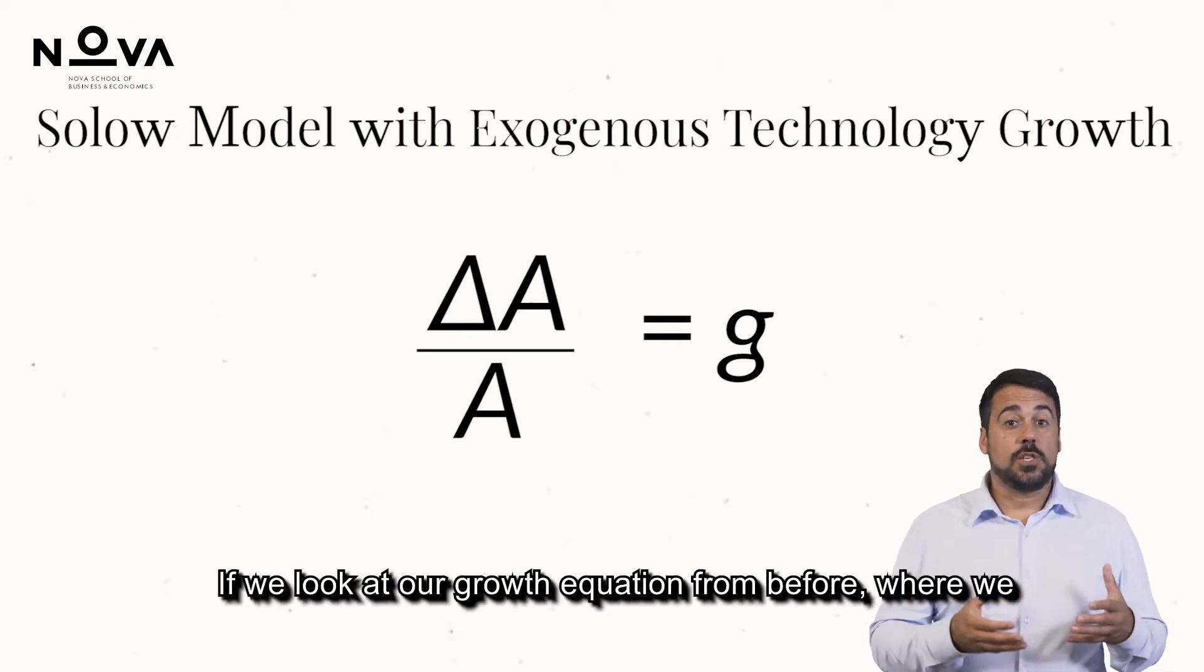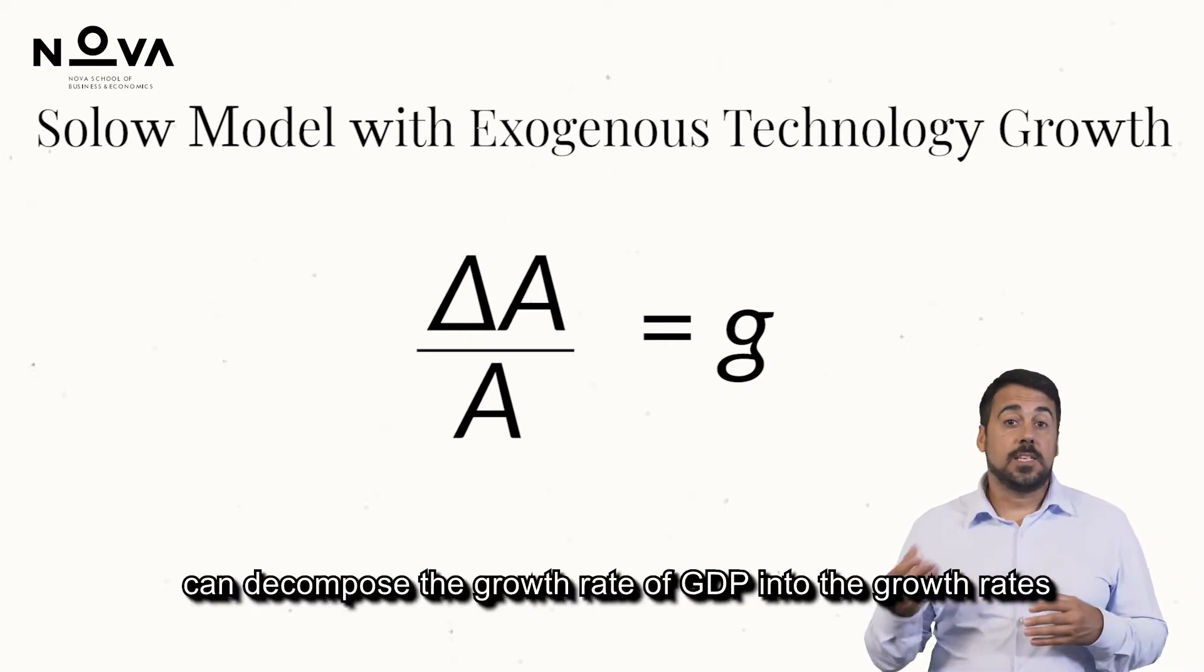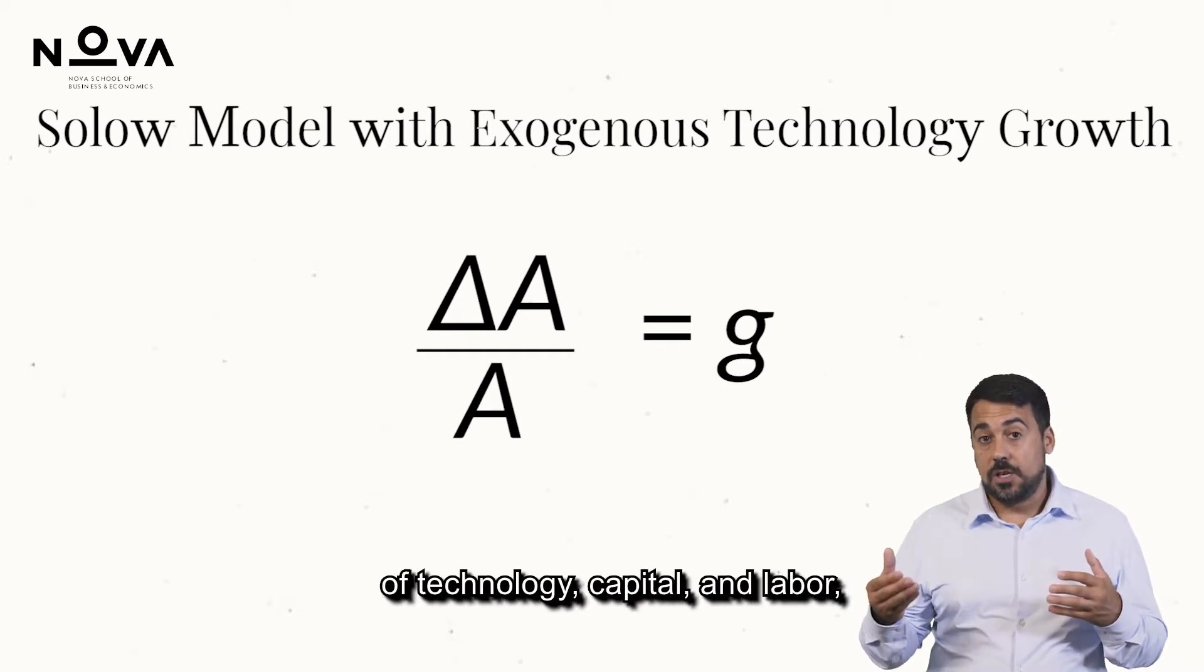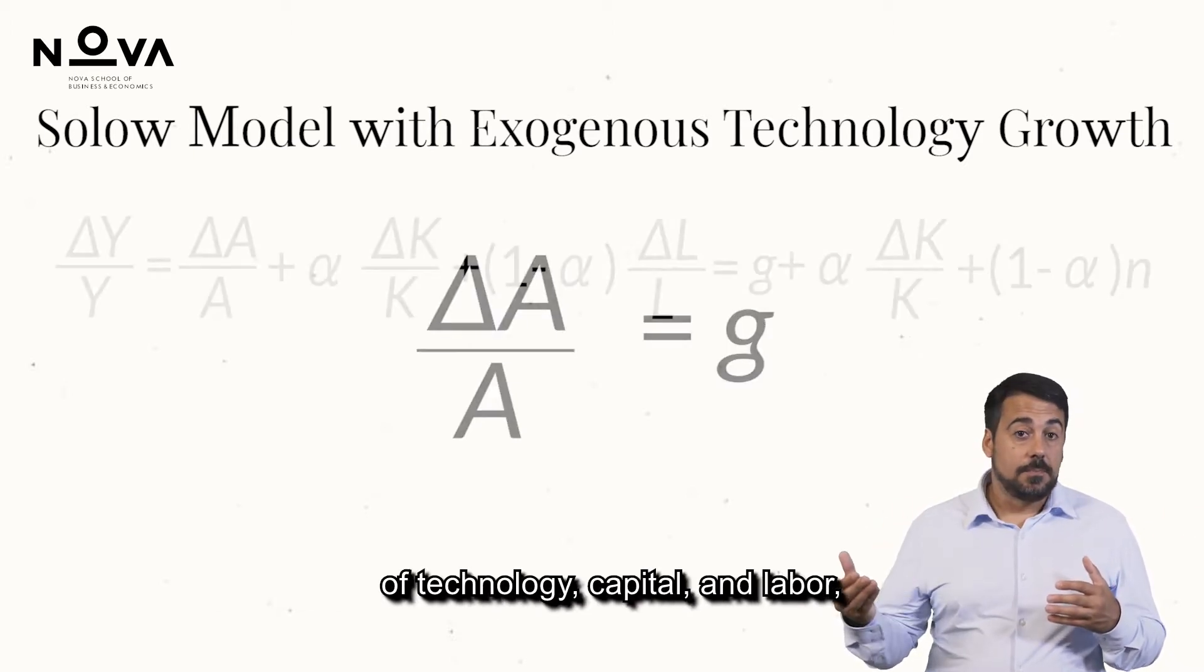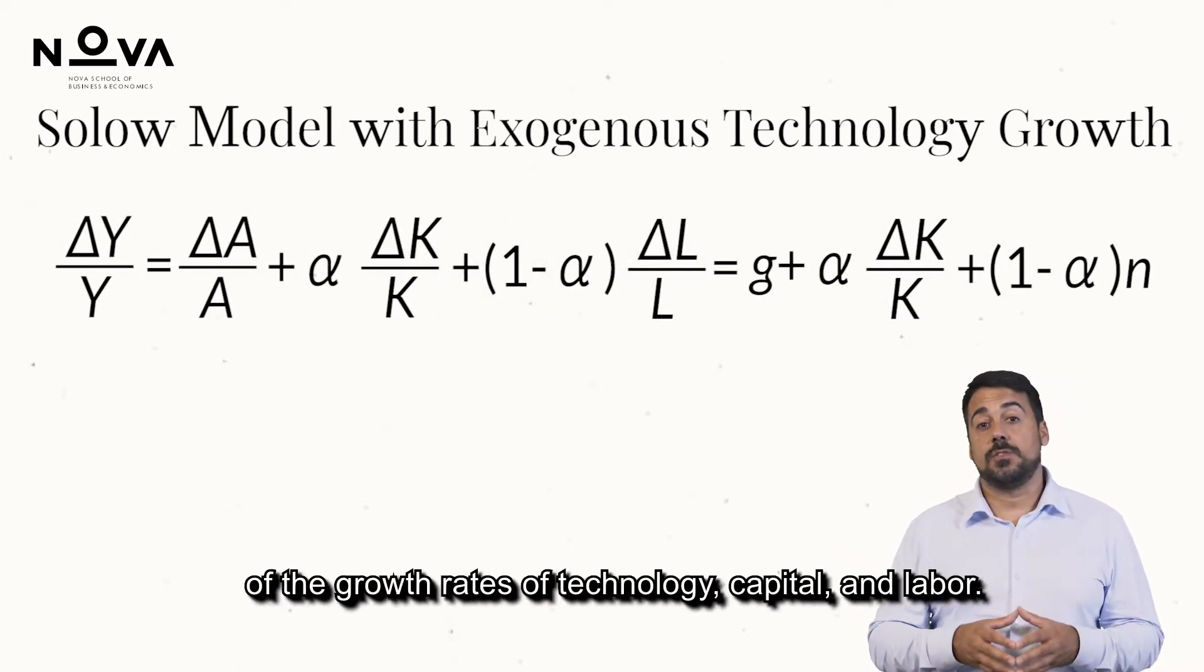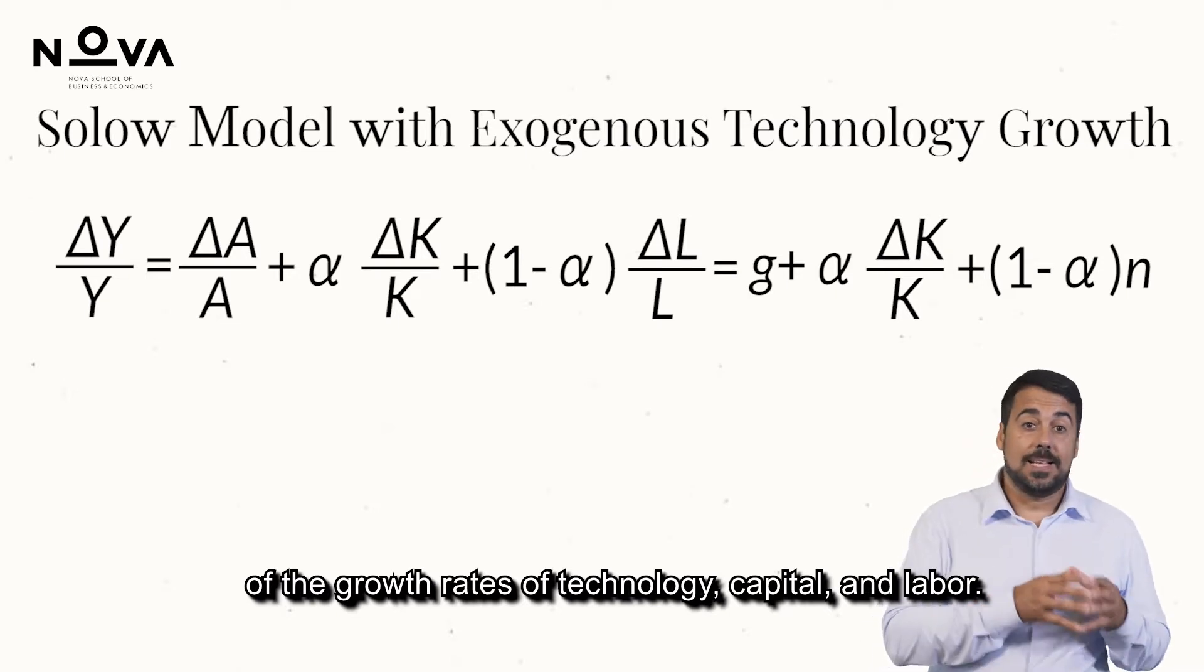If we look at our growth equation from before, where we can decompose the growth rate of GDP into the growth rates of technology, capital, and labor, we now get that the growth rate of GDP is a linear combination of the growth rates of technology, capital, and labor.